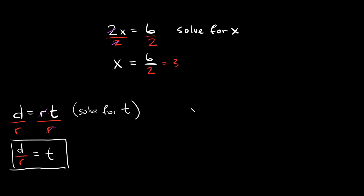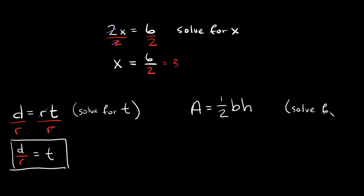Let's try one last example. For this example, let's use the area of a triangle, which is: the area is equal to one half the base times the height. Let's say we were asked to solve for h. If I want to solve for h, that means I have to isolate it by itself on one side of the equal sign. So that means I have to get rid of this fraction, and I have to get rid of the b.